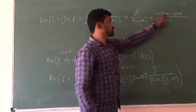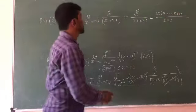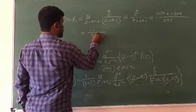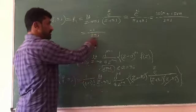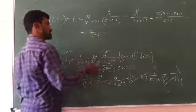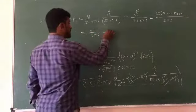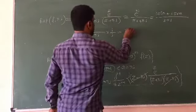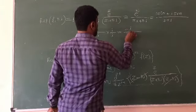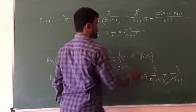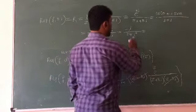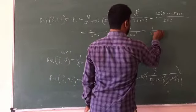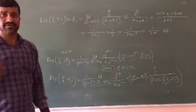Using Euler's formula, e raised to i theta equals cos theta plus i sin theta. So e raised to i pi equals cos pi plus i sin pi, which equals minus 1 plus 0, giving minus 1. Therefore the residue equals minus 1 divided by 2 i pi. Simplifying, this equals i divided by 2 pi, since 1 over i equals minus i and i squared equals minus 1. This is the answer for Case 1.